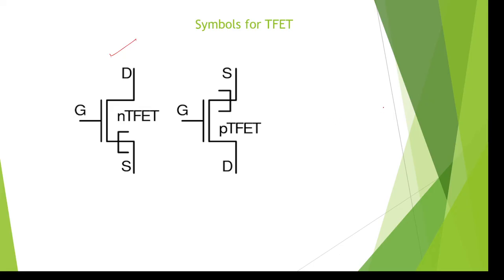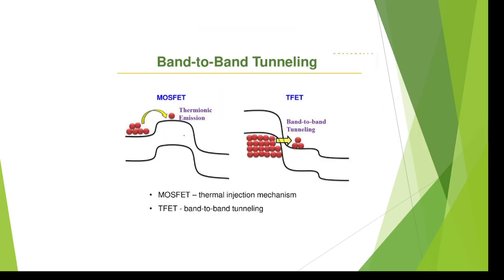We know the normal FET symbol — source, gate, and drain. For PMOS the symbol is also familiar. For T-FET, there is one extra element in the symbol compared to a normal MOSFET. The application is the same — it acts as an amplifier, amplifying small input signals. Here is the band-to-band tunneling diagram.